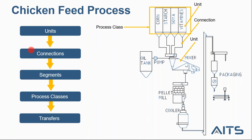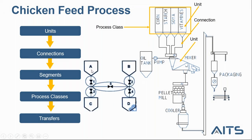Then we will configure the connections — the path where material is transferred between two units. For example, we have four different connections between each of the four raw material storage tanks and the mixer, a connection between the mixer and the pellet mill, the oil tank and the mixer, and so on. The segments are part of the connections. For example, between connection A and D we have three different segments: segment one, segment five, and segment four. Between connection A and C, we have two segments: segment one and segment three. In our demo today, we will not have segments.